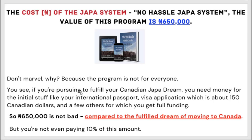So what is the true cost of this program? The No Hassle Japa System actually costs 650,000 Naira. Don't be alarmed — this program is not for everyone. If you are pursuing your Canadian Japa dream, you need money for initial things like your international passport and visa application, which is just 150 Canadian dollars, and a few other things. You might get full funding and scholarship for other things, but you need some money for preliminary steps. 650,000 is not bad compared to fulfilling your dream of moving to Canada.